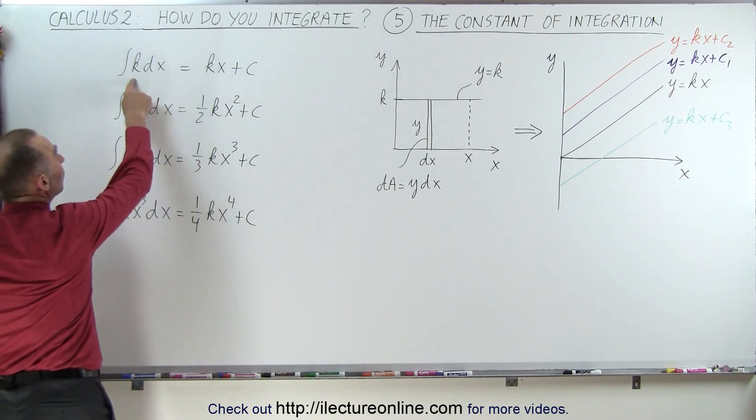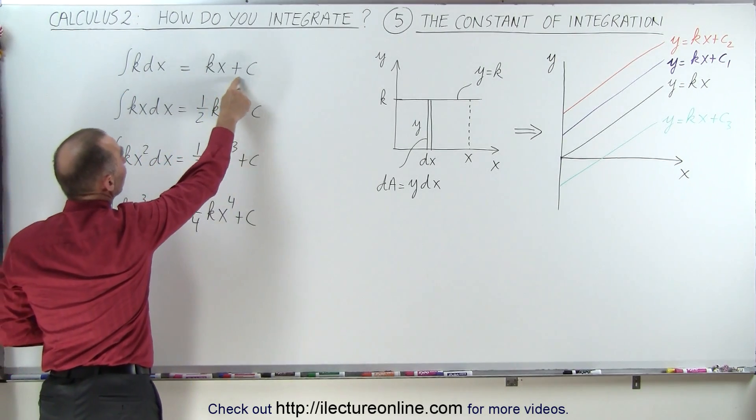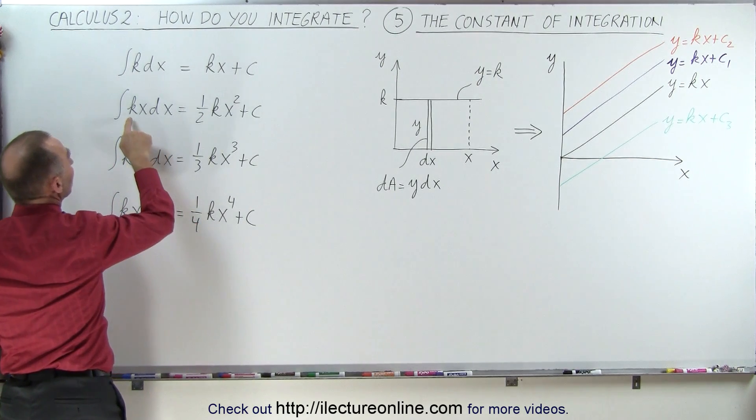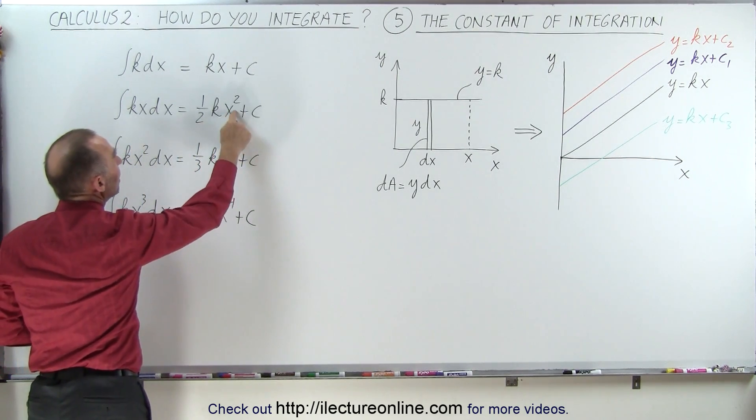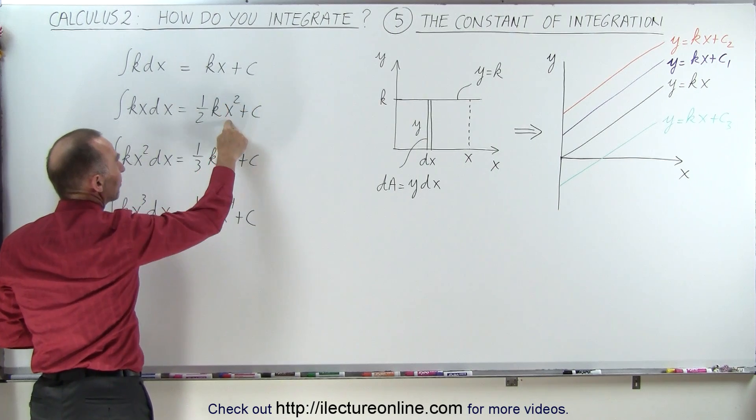Notice that the integral of a constant is k times x plus a constant of integration. The integral of kx is one-half kx squared plus c. We add one to the exponent, divide by the new exponent.